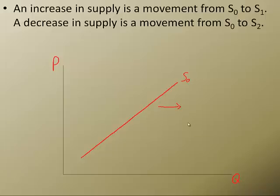Just like demand shifted to the right, supply will shift to the right when it increases. So I'm going to label this S1 and S1 is an increase in supply compared to S0.